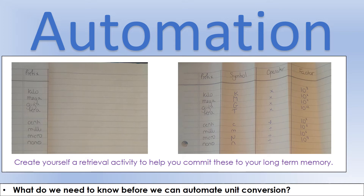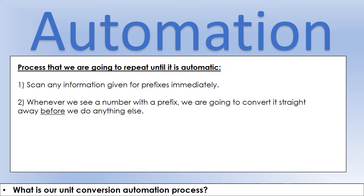So what is going to be our automation process? If we want something to become automatic, we have to follow the same process every single time. When we get given a question, the first thing I do — not even really reading the question — is just scan through: have I been given any prefixes in the information? And whenever I see a number with a prefix, I'm going to convert it straight away before I even try and answer the question. You might even consider, in an exam, spending a couple of minutes at the start scanning every single question for prefixes.